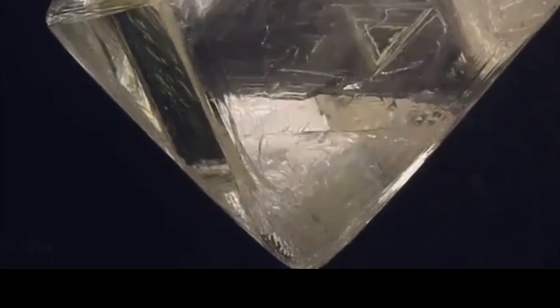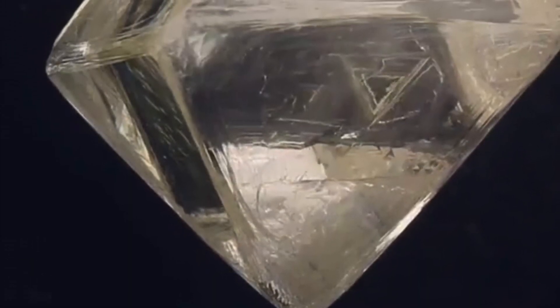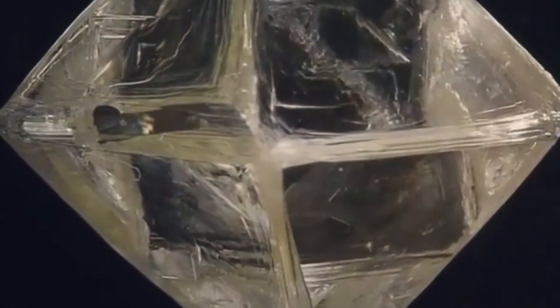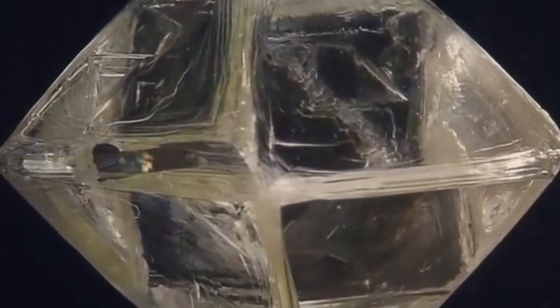Trigons are usually polished away during the cutting and polishing process. Sometimes the diamond cutter and polisher will leave a trigon on the surface of a diamond as proof of its natural origin, automatically differentiating it from a laboratory grown diamond.